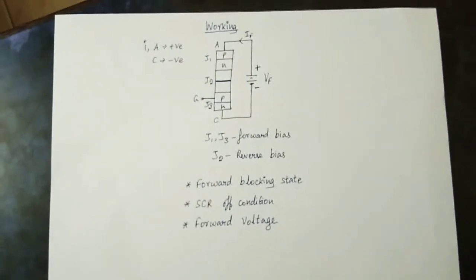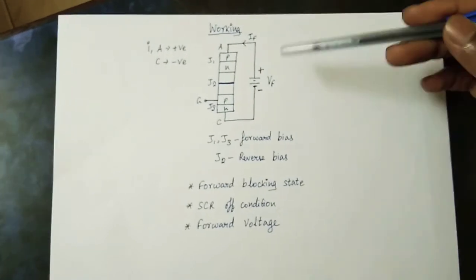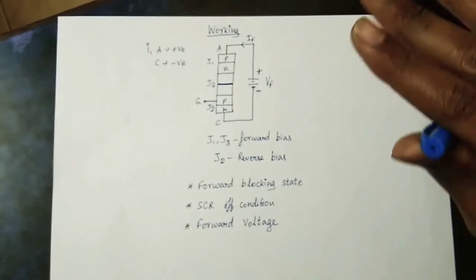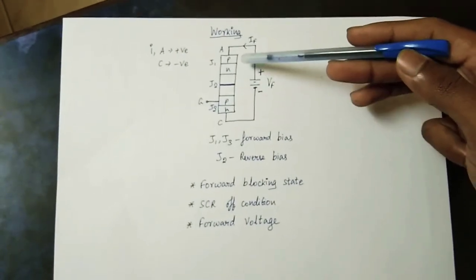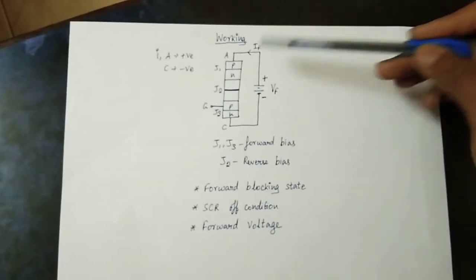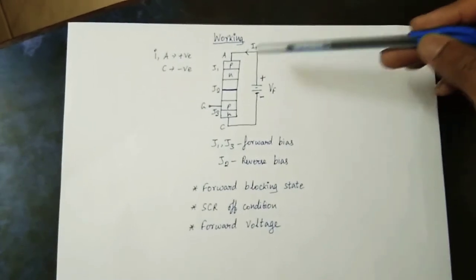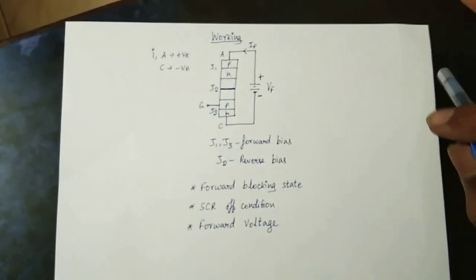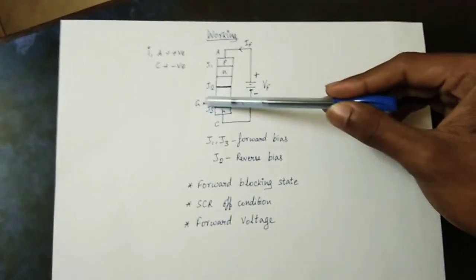Let's talk about SCR working. This is a PNPN 4-layer device with J1, J2, and J3 junctions. This is the anode — anode positive and cathode negative. In the first condition, the gate is open.